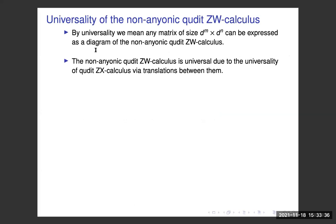Because of these translations, we can talk about the universality of this ZW calculus. Universality here means that any matrix of size d^m by d^n can be expressed as a diagram in this ZW calculus. Because the QD-ZX calculus is universal and there is a translation between them, the QD-ZW calculus is also universal.